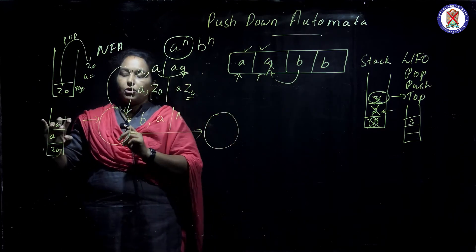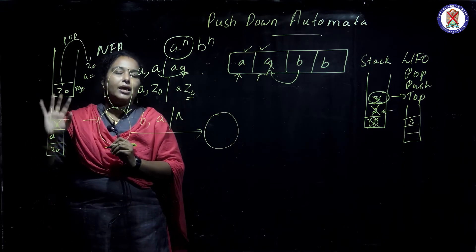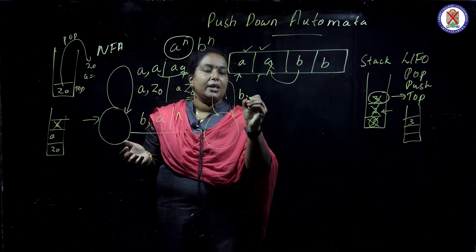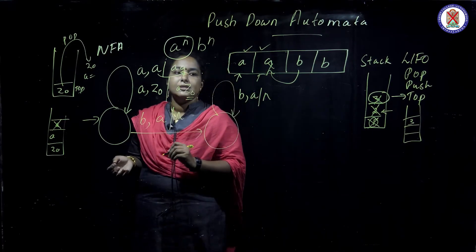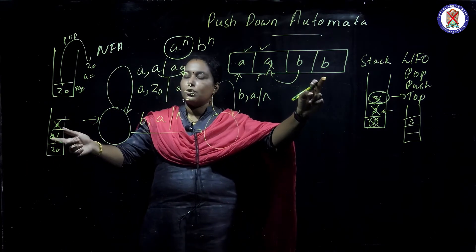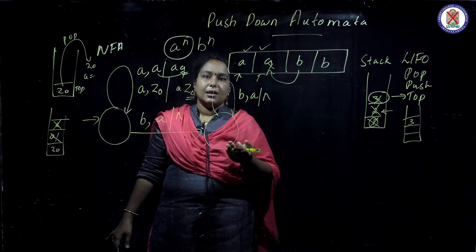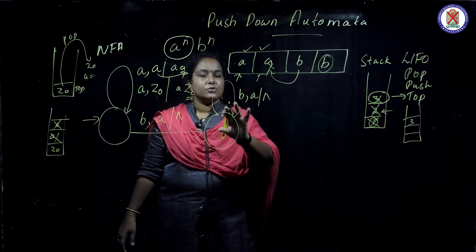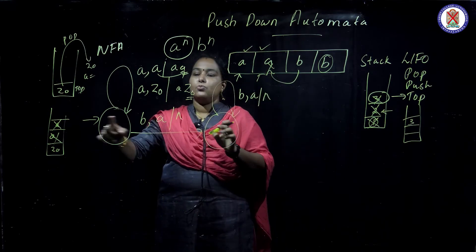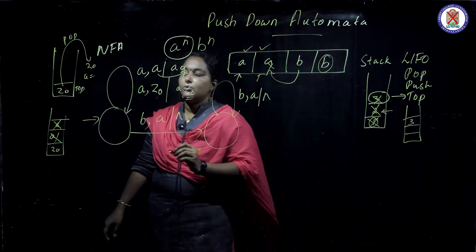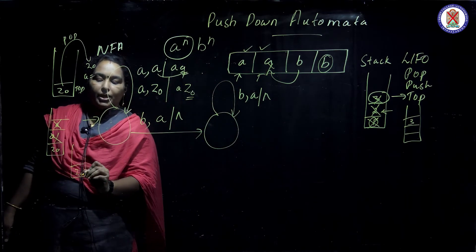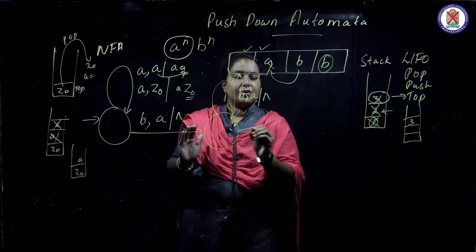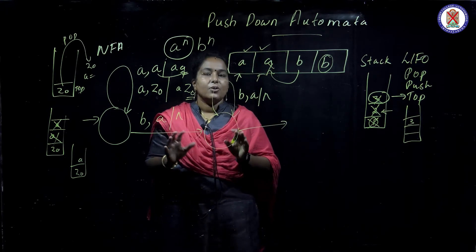When 'b' comes and stack top is 'a', that 'a' is removed. This repeats for as many 'b's as there are 'a's. If there is no 'b' — for example, no 'b' present — the automata gets stuck. If 'b' comes and the first 'b' cancels one 'a', but remaining items are Z0 and 'a', the automata gets stuck at that point.